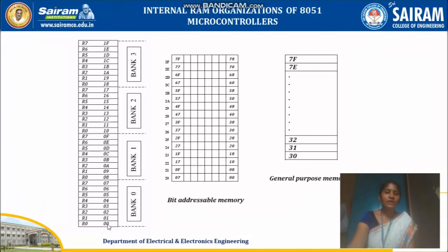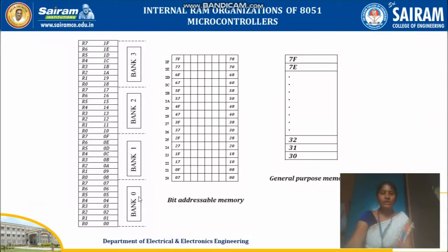You can see here register bank 0 with 8-bit registers, bank 1 with 8-bit registers, bank 2 with 8-bit registers, and bank 3. So each bank has 8-bit registers. The address starts with 00H and goes up to 07H for bank 0.